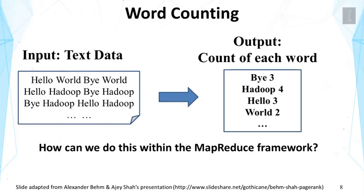Let's look at a simple example: word counting. The input is files containing words, and the output is the number of occurrences of each word. This kind of counting is useful to assess the popularity of a word in a large collection, which is useful for achieving the effect of IDF weighting for search. This task can be done in parallel by counting different parts of the file in parallel and then combining all the counts — that's precisely the idea of MapReduce. We can parallelize on lines in the input file.